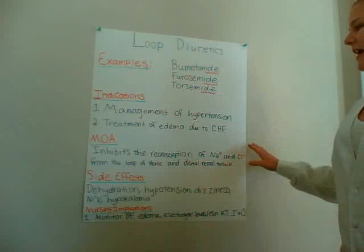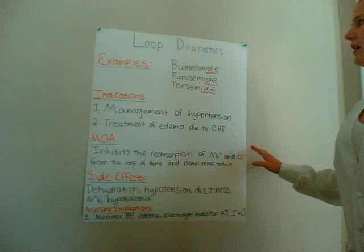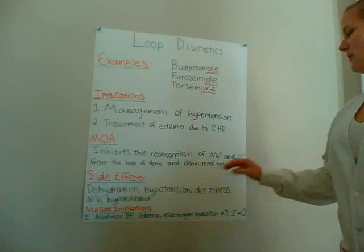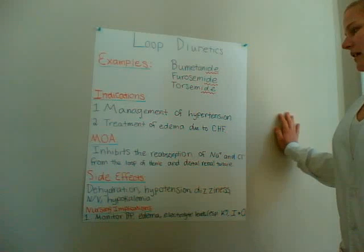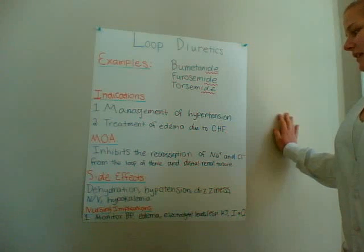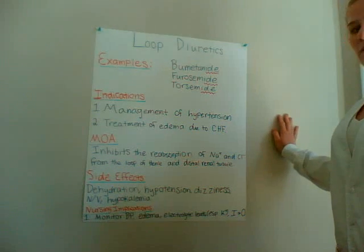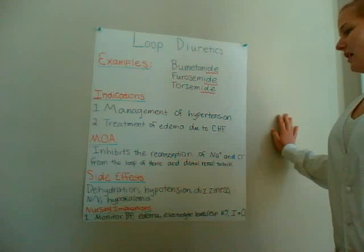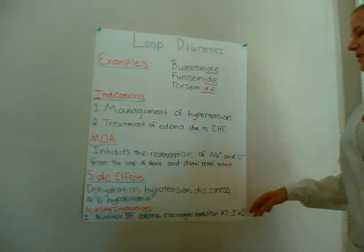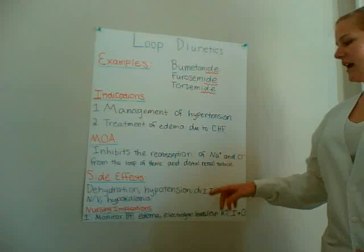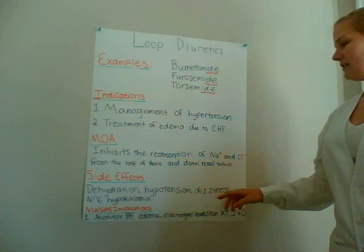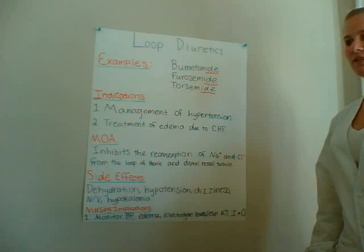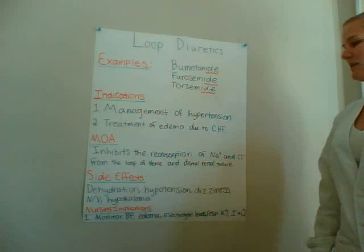The mechanism of action for loop diuretics is they inhibit the reabsorption of sodium and chloride from the loop of Henle and the distal renal tubule. Some side effects of these medications are dehydration, hypotension, dizziness, nausea and vomiting, and hypokalemia because they're not potassium sparing.